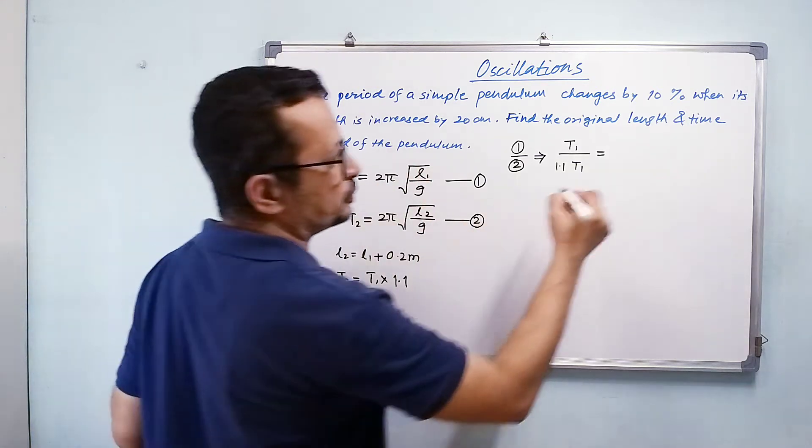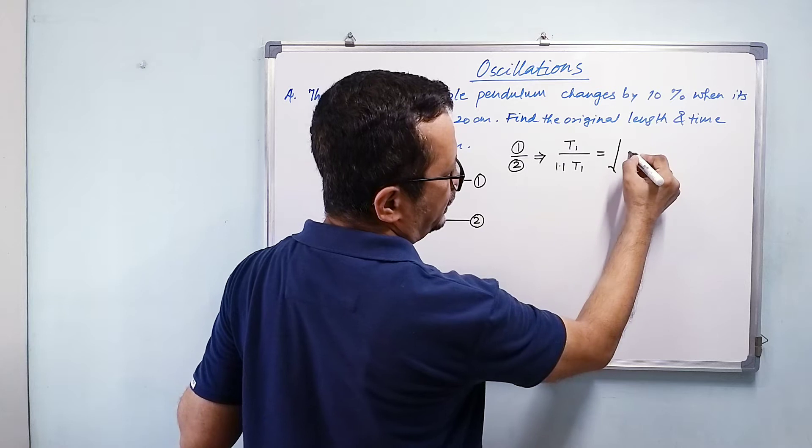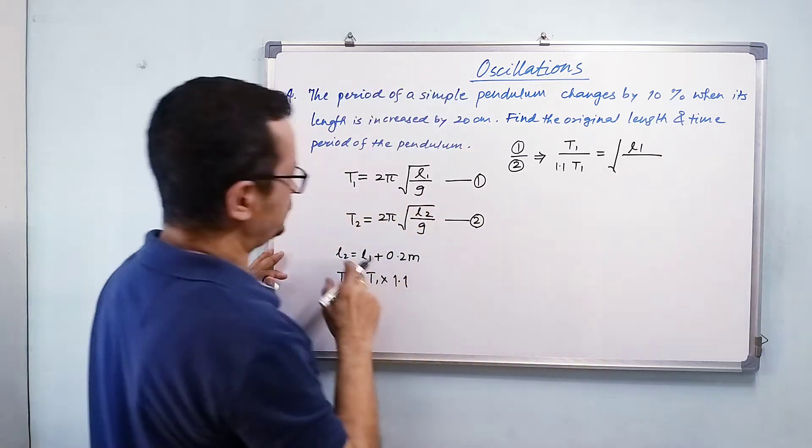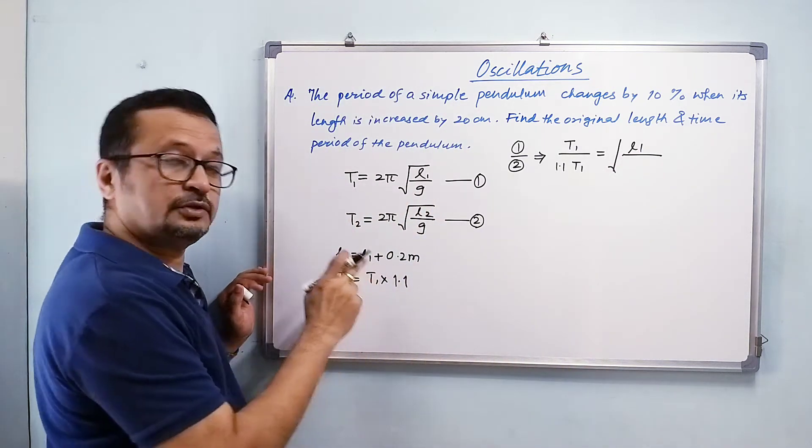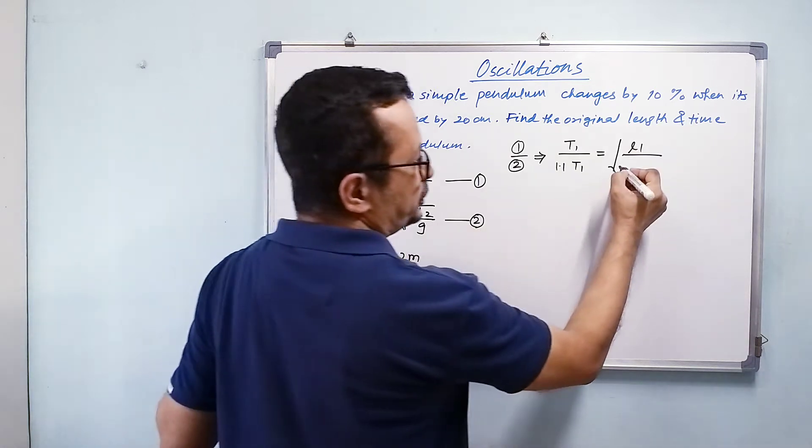So l₁ upon, what is my l₂? Is it not l₁ + 0.2 meter?